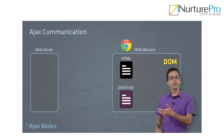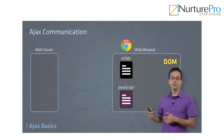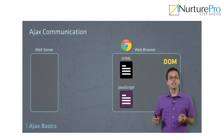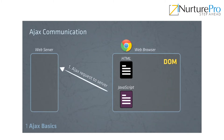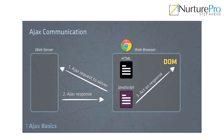Here's our server and our browser again. Notice the browser has already loaded our web page into the DOM, but we want to get additional data from the server. So inside of our JavaScript, we do an Ajax request to the server. Our web server then returns an Ajax response, which could be HTML or another data format. Then our JavaScript can act on that response, perhaps interacting with the DOM and updating our web page.